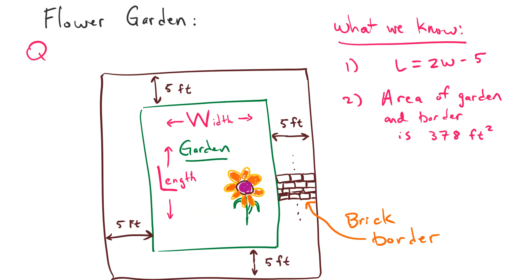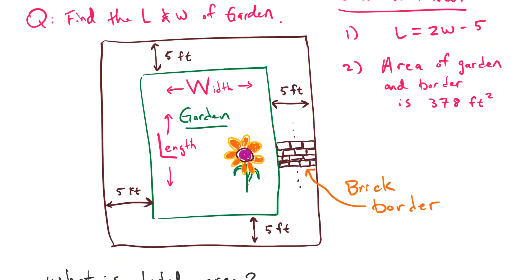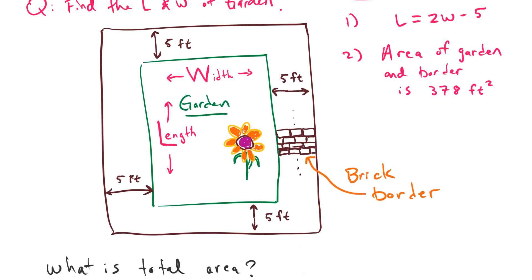And the question they pose, the question that we have to solve, is they want us to find the length and the width of the garden without the bricks. So we've got to figure out how to use the information they give us here. So to use the area amount, this right here, the 378 feet squared...